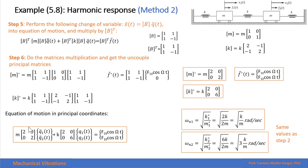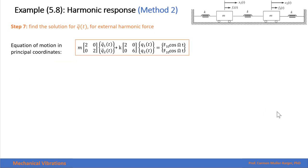The natural frequency of the first equation is the square root of the spring constant divided by the mass, giving the first natural frequency. The natural frequency for the second equation gives the square root of 3k over m, which is the second natural frequency. These two natural frequencies are the same as the ones obtained when solving the eigenvalue problem.